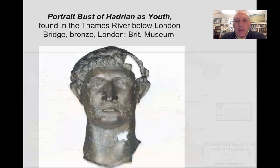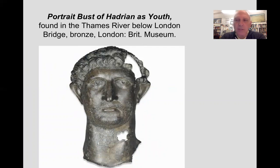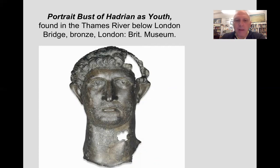Here's an image of him. There are lots and lots of bust portraits in bronze and in marble of this emperor, a very popular emperor in his own right. This is an image that shows him as a young man — probably one of the earliest images we have of Hadrian as a young man. This was found in the Thames River in London, a bronze sculpture that miraculously survived. It shows him as a young, mustachioed young man long before he became emperor.